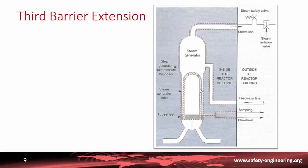The steam generator tubes play two roles simultaneously. This underlines their importance, because the two barriers are combined at this level. It is therefore very important first to design these tubes with adapted materials, and then during operation to control any leaks and to periodically assess the health condition of the material through non-destructive examination — an important part of maintenance during reactor shutdown.